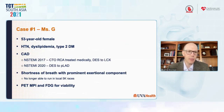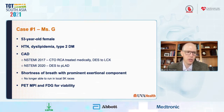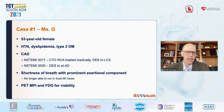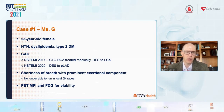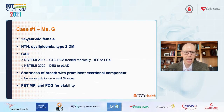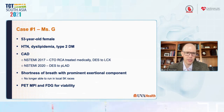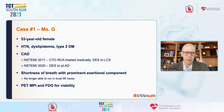We'll start with case number one. Ms. G is a 53-year-old female with a history of hypertension, dyslipidemia, and type 2 diabetes mellitus. She has known CAD and had NSTEMIs in 2017, at which time she was found to have a CTO of the RCA that was treated medically, and she received a drug-eluting stent to a left circumflex lesion. She also had an NSTEMI in 2020 and had a drug-eluting stent placed to a proximal LAD lesion and had been doing very well without any symptoms.